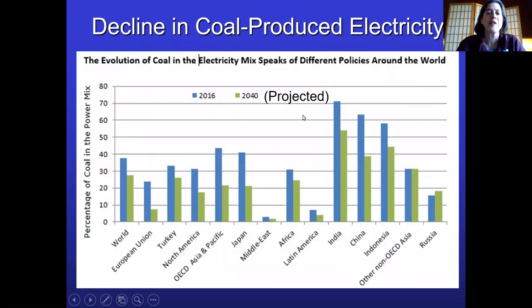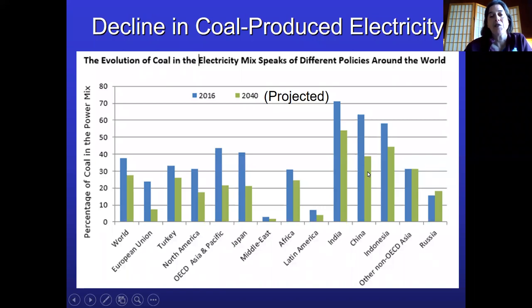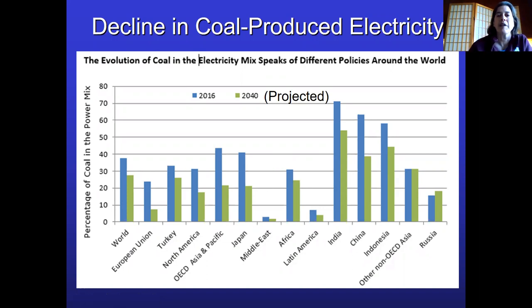Looking at current and projected future use, North America was at about 30% in 2016, but by 2040 we're looking at around 18%. China, currently getting around 60% of its electricity from coal, will be below 40% by 2040. The good news is that because coal is a very dirty energy source, nearly all areas of the planet will be reducing their coal usage over the next 20 years.